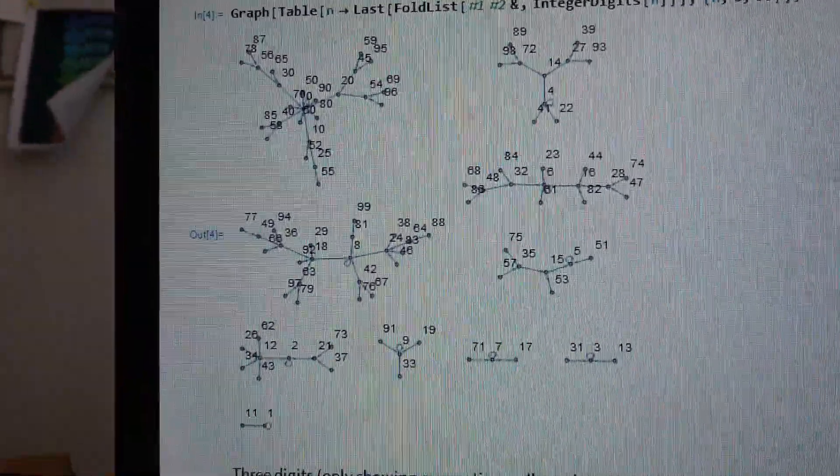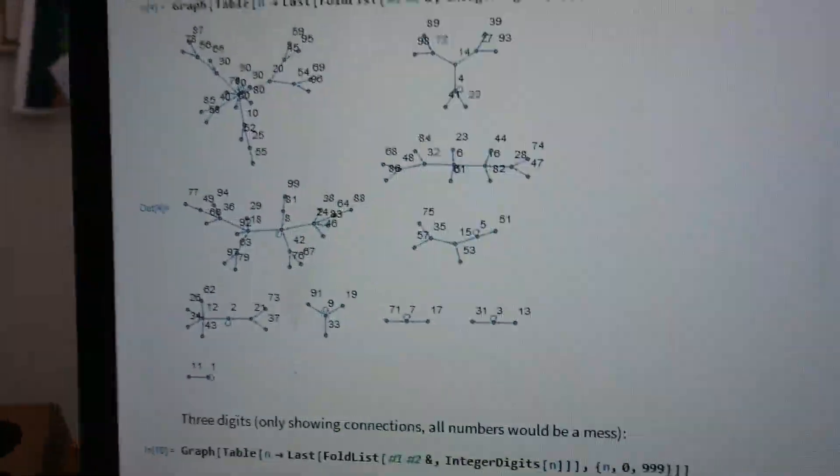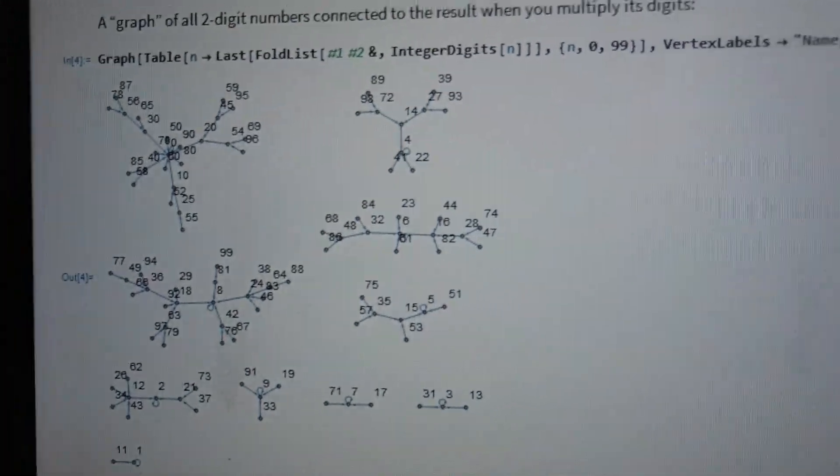Not its persistence. But the result that you get when you multiply its digits. Ah, that's the result. Okay, I got really confused. Yeah. That's the result that you get. And this was your idea to show it like this.